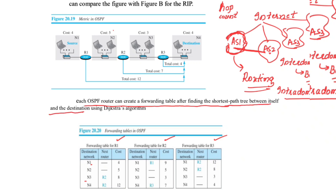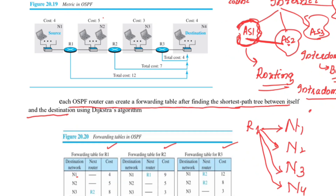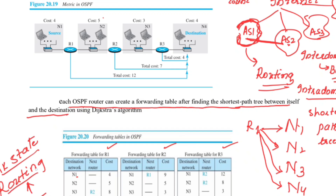Each OSPF router creates a forwarding table after finding the shortest path tree between itself and the destination. It determines the shortest path to reach all networks N1, N2, N3, N4. The shortest path tree is constructed using Dijkstra's algorithm. OSPF is based on link state routing, and I have explained how to construct the least cost tree using Dijkstra's algorithm in a previous lecture.